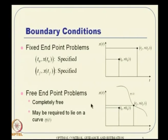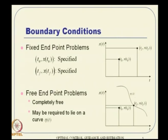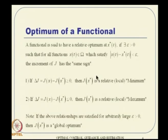Coming to the boundary conditions, we discussed two classes: fixed endpoint problems and free endpoint problems. Fixed endpoint problems can have both time and state fixed. The time t0 and tf can be fixed with x fixed at both ends, or it can be a free endpoint problem where the endpoint can be completely free or required to lie on a specific curve. I gave an example of satellite launch: when you launch a satellite, it doesn't matter where you join the orbit—from there it will keep staying in orbit anyway.